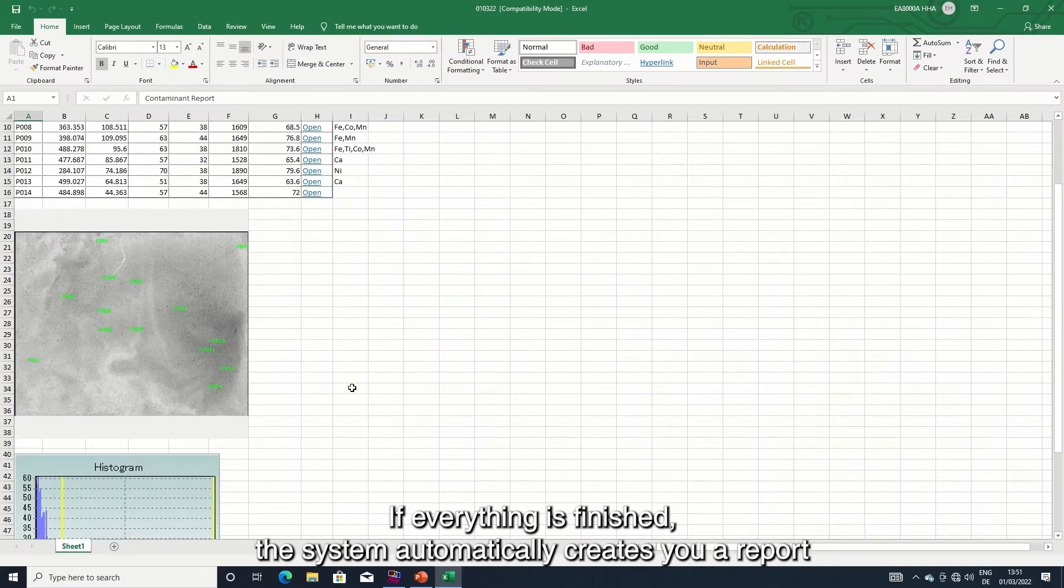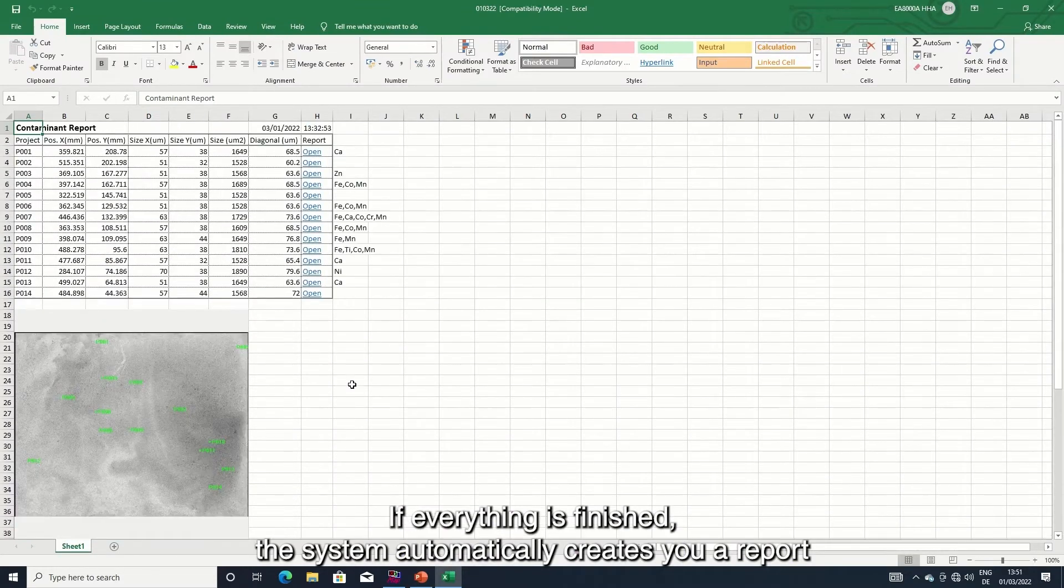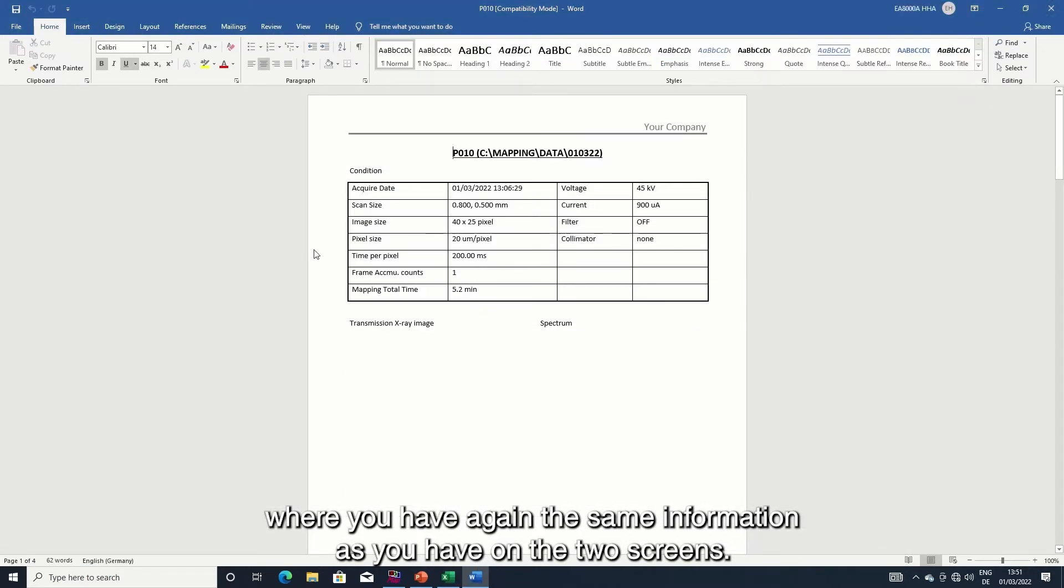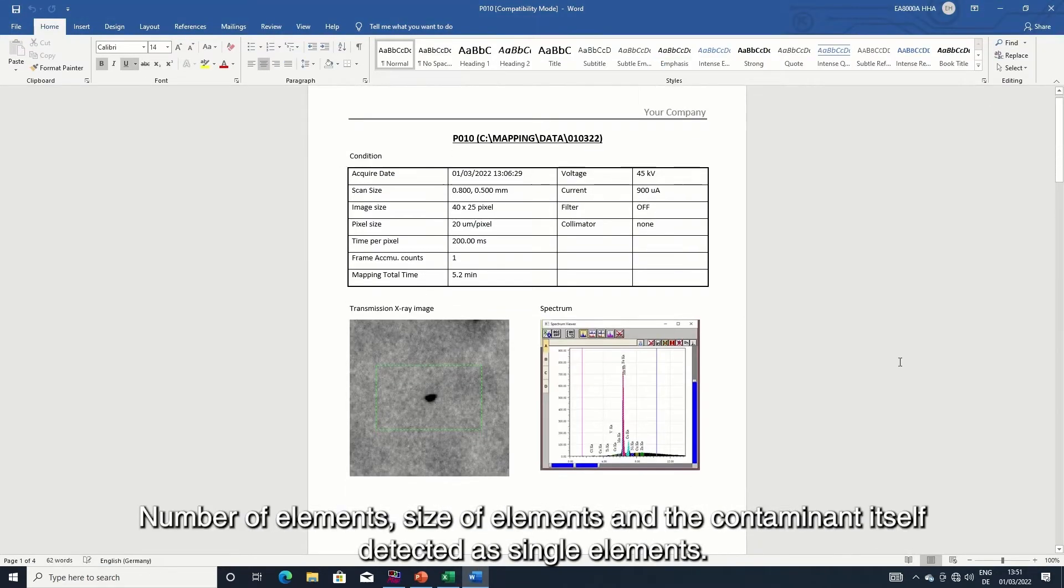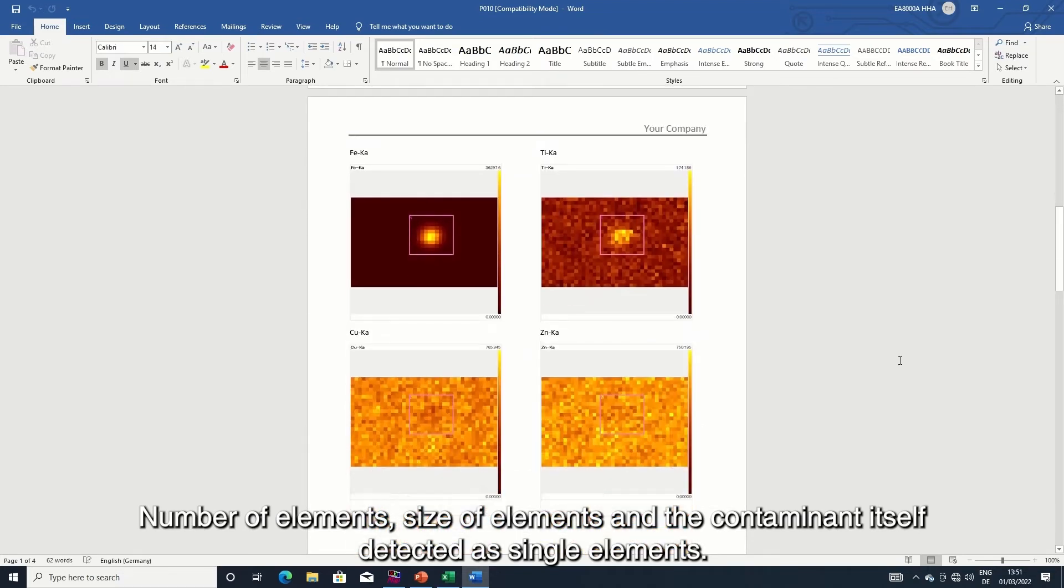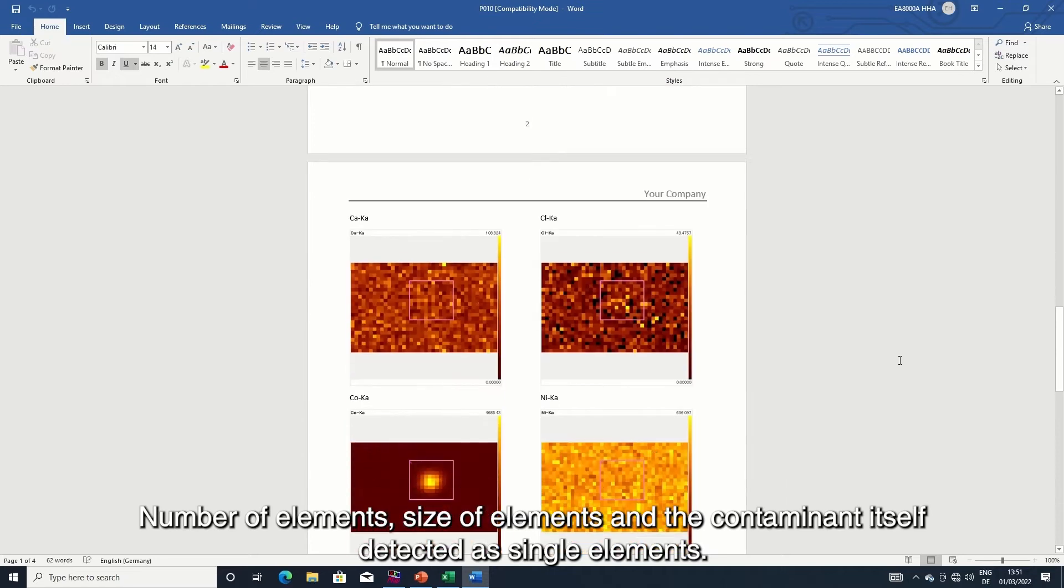If everything is finished the system automatically creates your report where you have again the same information as you have on the two screens. Number of elements, size of elements, and the contaminant itself detected as single elements.